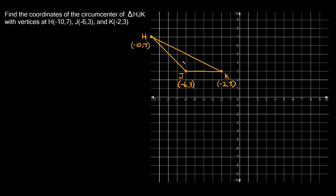The second thing we have to do is find two midpoints. First, let's find the midpoint of the bottom side, from J to K, because that looks like it'll be easy to find. That distance is 1, 2, 3, 4. Since this is a perfectly horizontal line, the midpoint is right here in the middle — two spaces away from J and two spaces away from K.